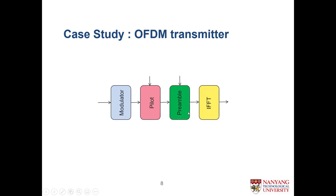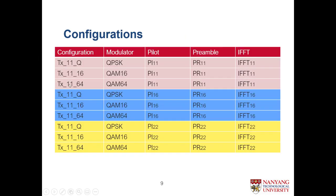A practical example: an OFDM transmitter processing chain with modules — modulator, pilot insertion, preamble insertion, and IFFT. I can have different modulators: QPSK, QAM-16, QAM-64; different pilots; different preambles; different IFFT implementations. Each valid combination represents a configuration. With three kinds of each module, theoretically there are 3×3×3×3 configurations, but practically not all combinations work together. Only nine valid configurations exist, and we call them configurations.